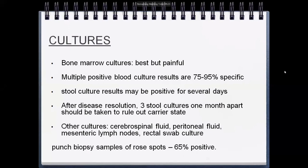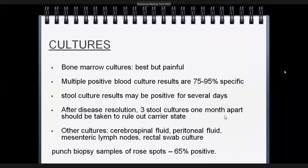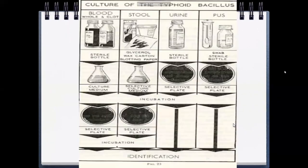In summary: O antigen appears early and disappears early; H antigen appears later and persists longer. Cultures are the best method for diagnosing enteric fever. Bone marrow culture is the best (done when other cultures are negative). Blood cultures are positive in 75 to 95 percent of patients and are highly specific. To rule out carrier state after disease resolution, three stool cultures one month apart should be taken. Other cultures include CSF (if meningitis suspected), peritoneal fluid, mesenteric lymph nodes, rectal swab, and rose spot punch biopsy (positive in 65 percent).